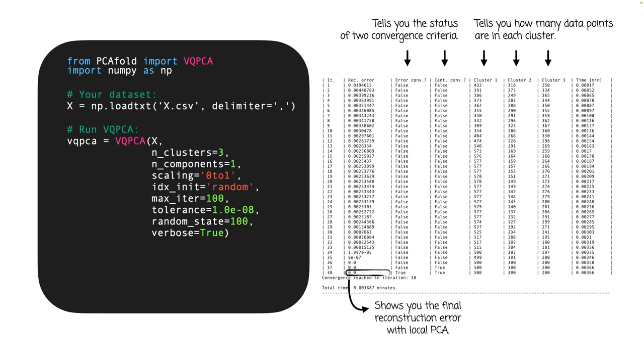And finally, this number from the last iteration shows you the final reconstruction error with local PCA, with which local PCA approximated the whole dataset. And note that after the VQPCA algorithm has converged, this error will rarely be zero for real-life datasets. The reason why in this example it is zero is that our starting dataset is composed of exactly three exactly one-dimensional structures. Hence, it can be entirely represented by a set of three one-dimensional vectors.